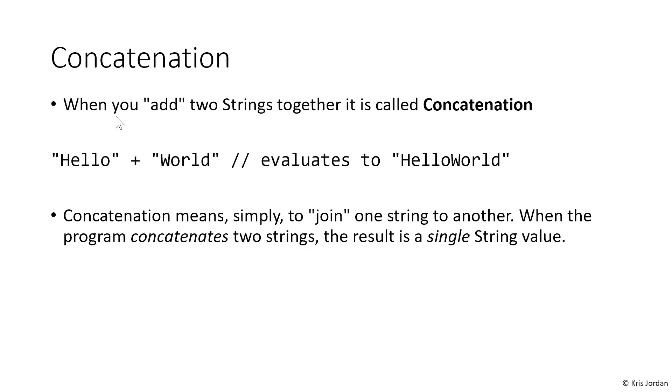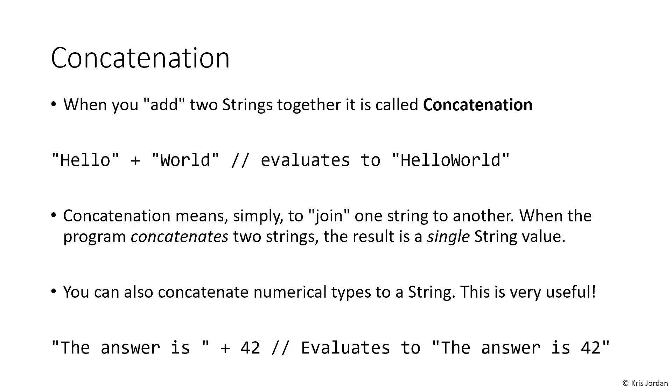We can use concatenation to join numbers in strings together as well. Whenever you try and add a string to a number, you're going to get a string back that has the number concatenated to it. This winds up being very useful when you're trying to debug programs. To give a quick example, if we have the string "the answer is" and we concatenate the value 42, we're going to get back a string that says "the answer is 42."